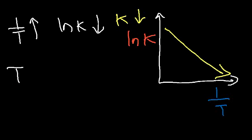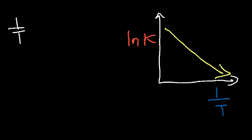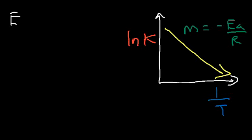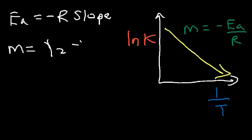One important thing to know about this equation is the slope. The slope m equals negative Ea over R. So if you ever need to find the activation energy, Ea equals negative R times the slope. If you can find the slope from the line by doing rise over run — using (y2 − y1)/(x2 − x1) — you can calculate the activation energy.